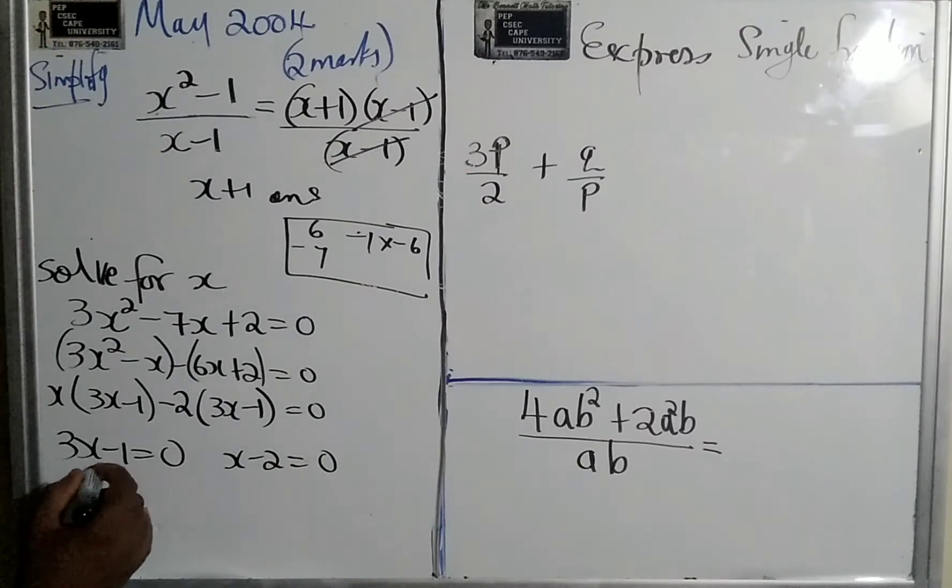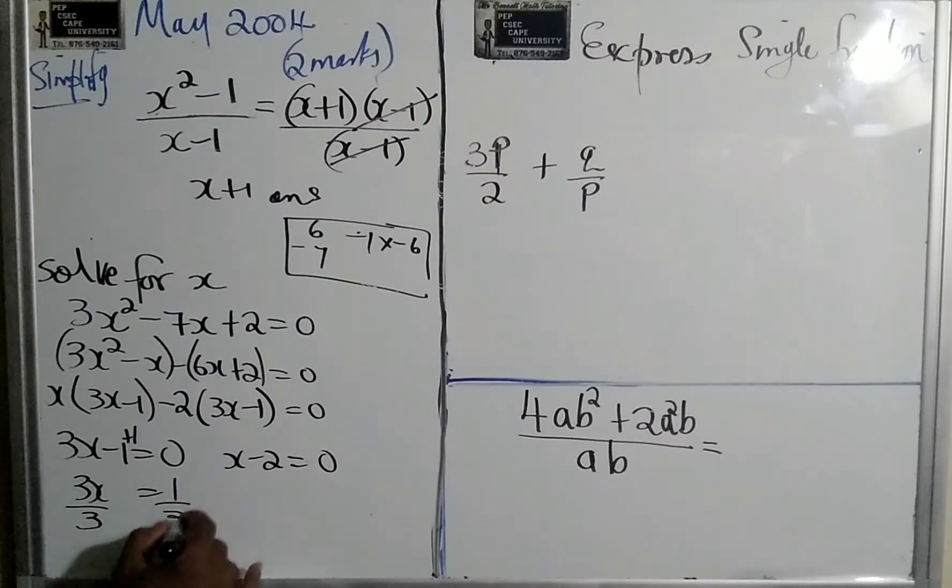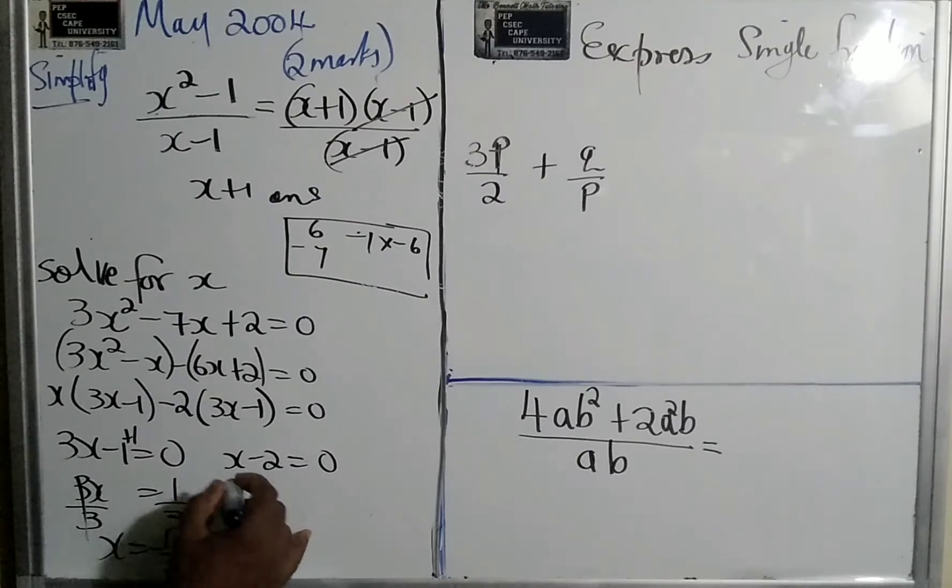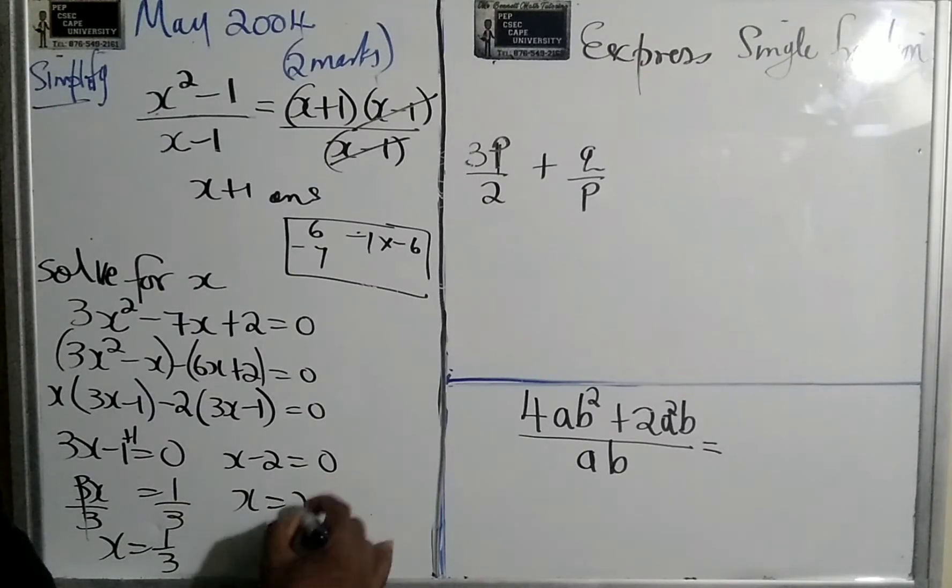This would give us 3x. We have the 1 here, so we get positive 1. So this is x is equal to 1 third and this now x is equal to positive 2.